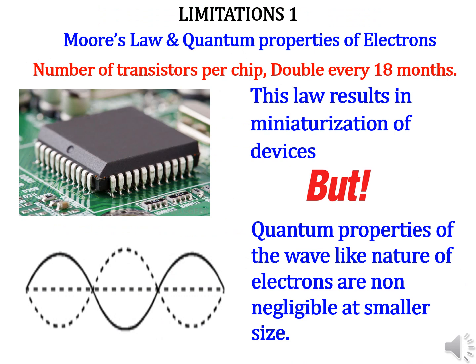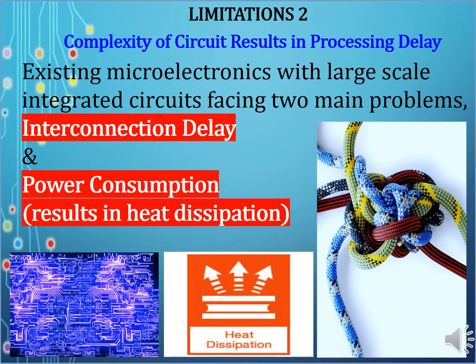The first limitation of electronics arises due to miniaturization of devices based on Moore's law. This law states that the number of transistors per chip doubles every 18 months. Today's miniaturized devices are the outcome of Moore's law. But in electronics, we have reached the point where quantum properties — the wave-like nature of electrons — are non-negligible at smaller sizes. The second limitation associated with electronics is complexity of circuits, which results in processing delay, interconnection delay, and power consumption leading to heat dissipation.